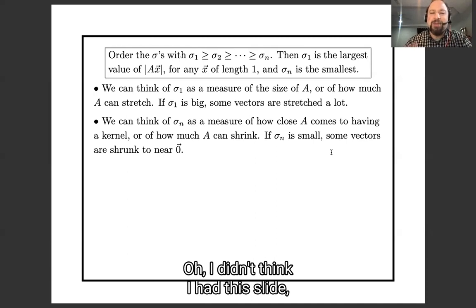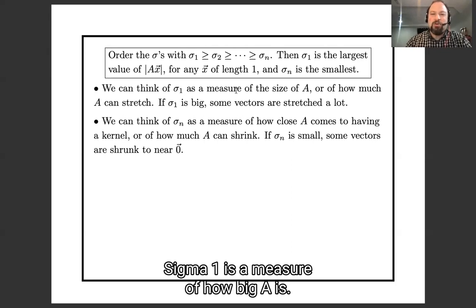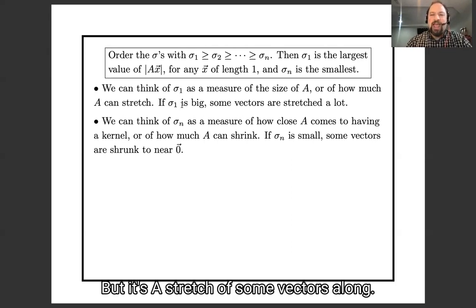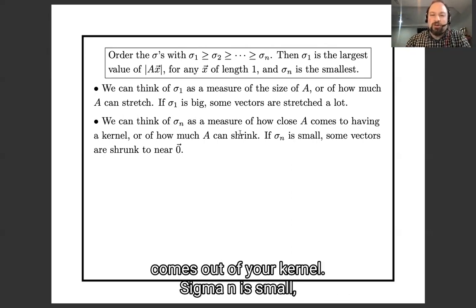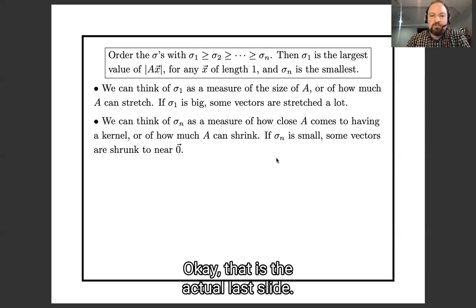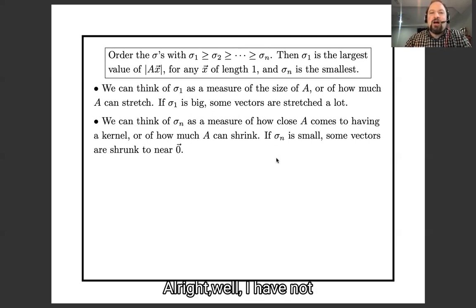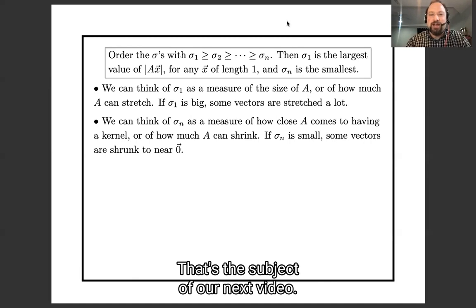So this slide says a bunch of things I just said. σ1 is a measure of how big A is. If σ1 is big, then A stretches some vectors a lot. And σn is a measure of how close A comes to having a kernel. If σn is small, then some vectors are mapped to very small vectors by A. Okay, and that is the actual last slide. All right. Well, I have not yet told you how to compute singular values and singular vectors. That's the subject of the next video.